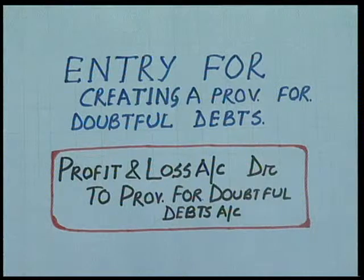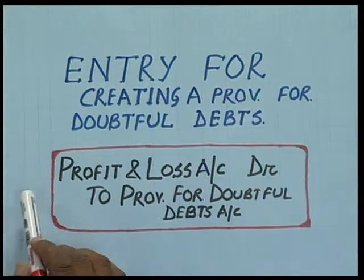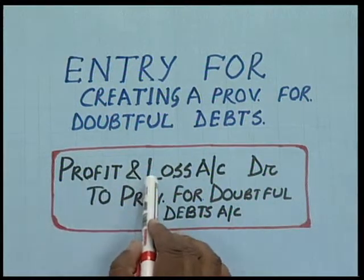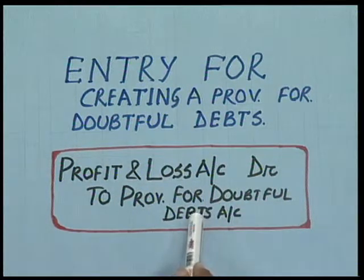Provision is a charge against profit. So for creating a provision for doubtful debts, we have to pass the entry: Profit and Loss Account debit to Provision for Doubtful Debts. This amount is to be debited in the profit and loss account before arriving at the net profit. We can also understand this practically through an example.